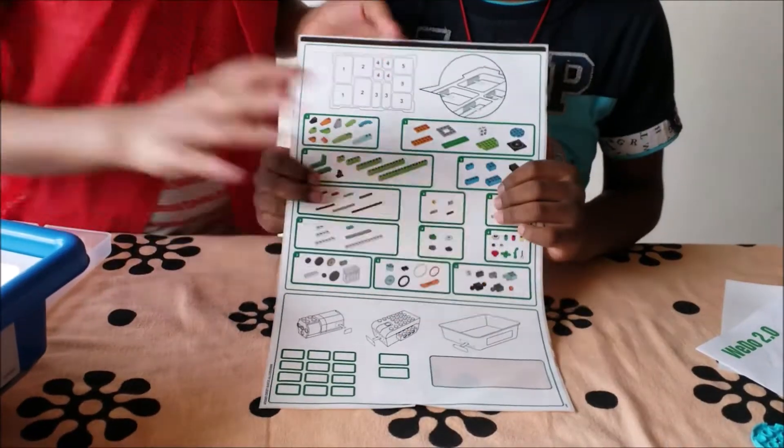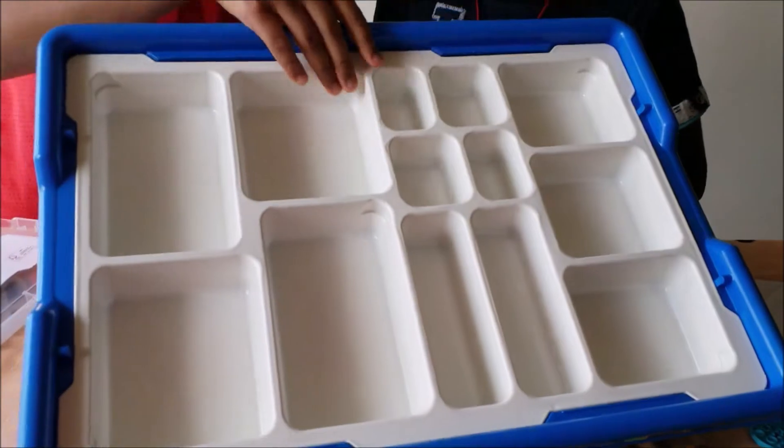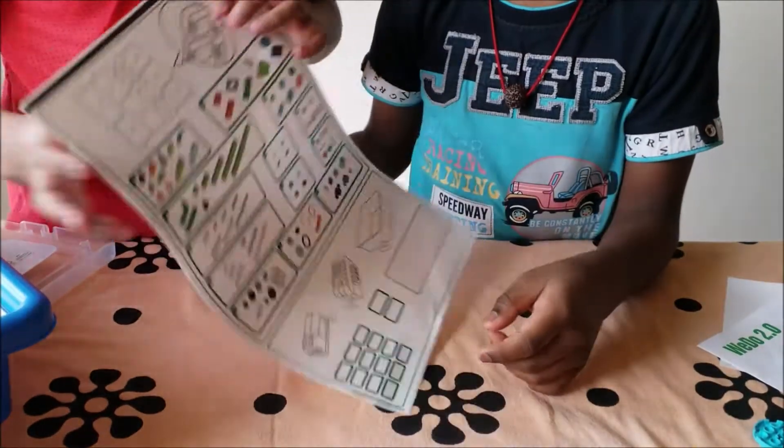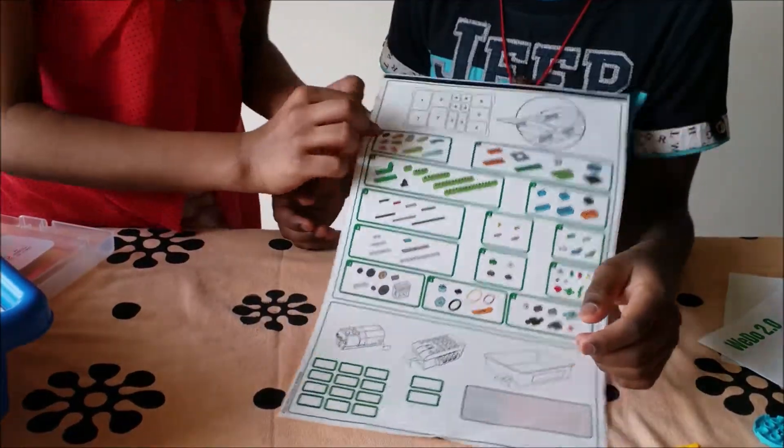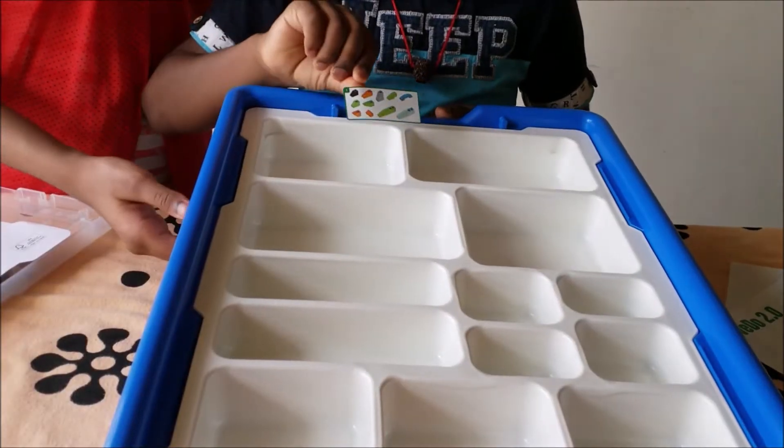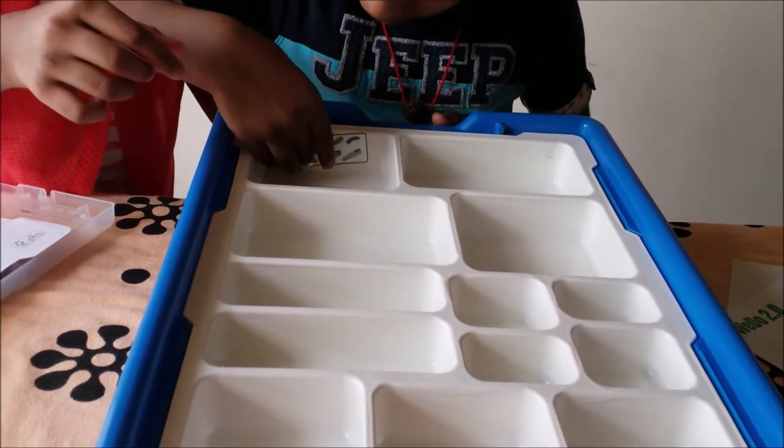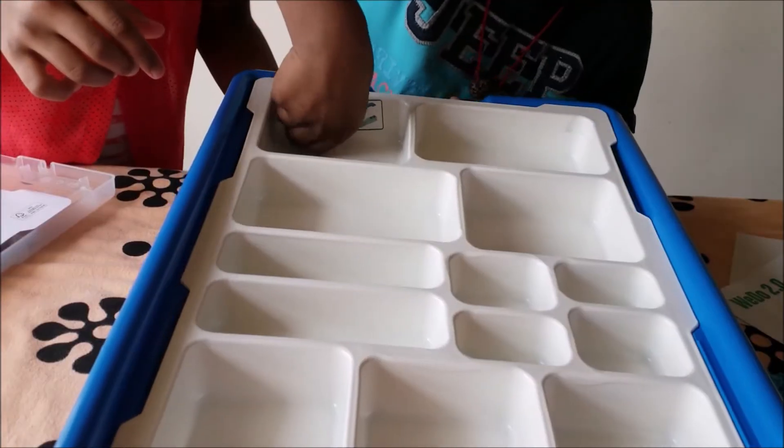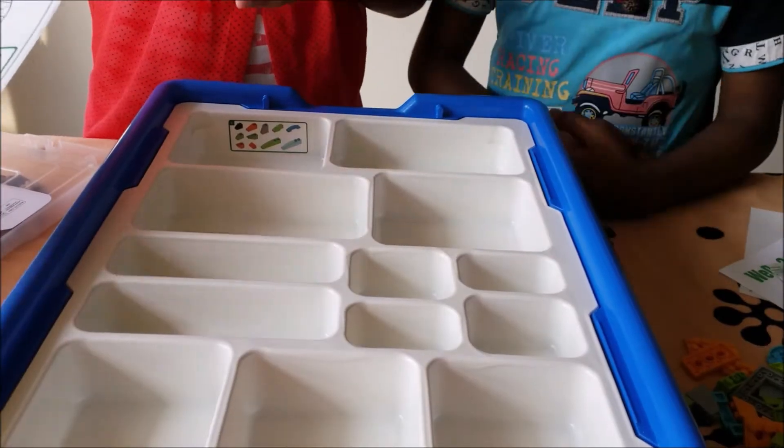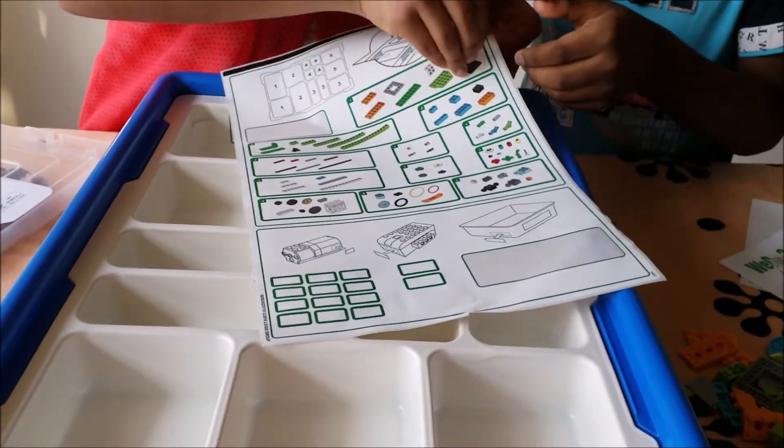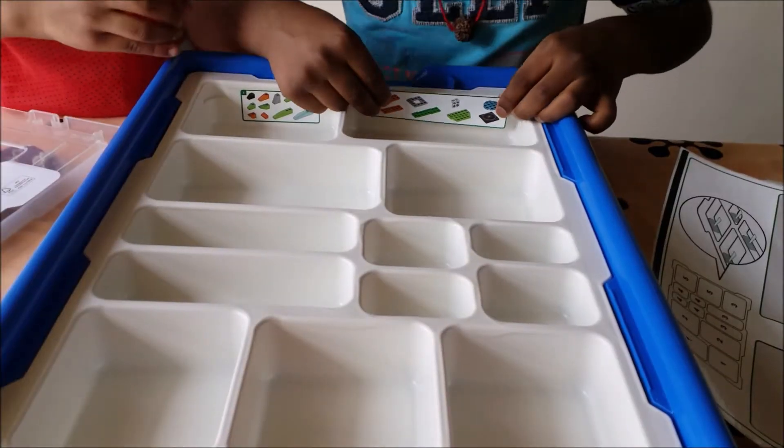These are the labels and we need to label these boxes. Okay, let's get the first ones. Look, it is marked as 1 over here. So we label it here. And let's label the other label number 1. We label it here.